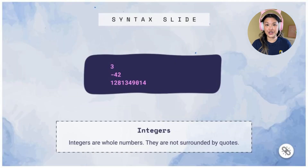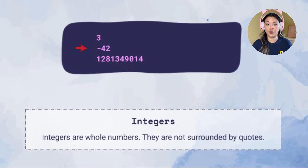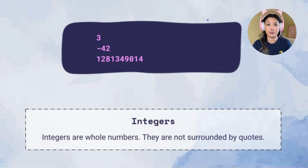So how about the integers? Was there anything you noticed that was similar about the integers? You might have noticed that they all look like numbers, and they are. Integers are whole numbers, and they are not surrounded by quotes — whole numbers with no quotes around them. So we've got 3, negative 42, 1,281,349, and 14.